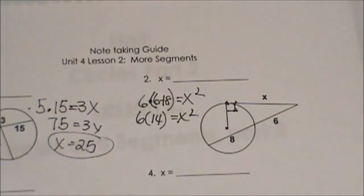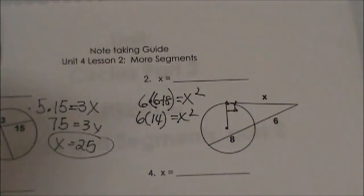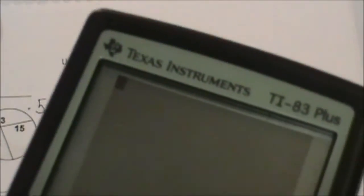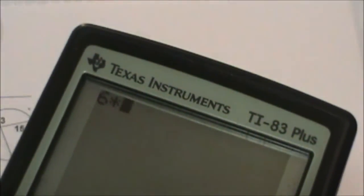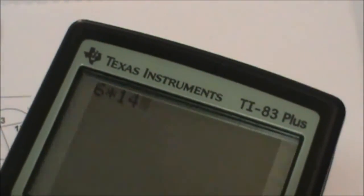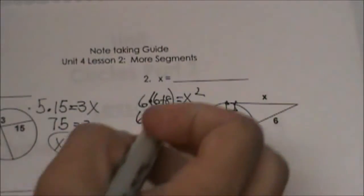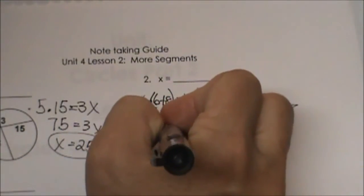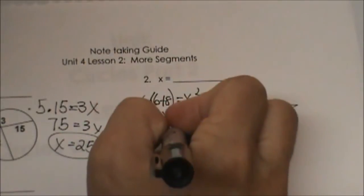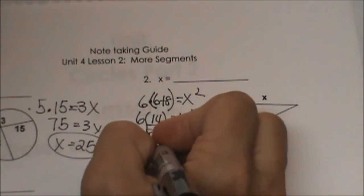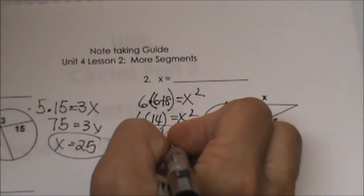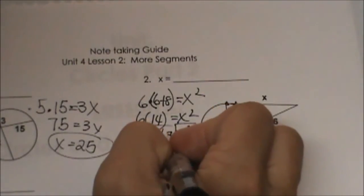Grab your calculator if you're not sure. I think that's 84, isn't it? 6 times 14... yeah, 84. So 84 equals x squared, and then we have to take the square root of both sides. That's going to be √84, which is 2√21.